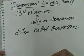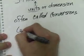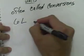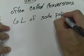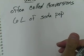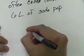The best way to learn is just to do an example problem. So let's take, let's say we have 6 liters of soda pop. And let's say that we want to convert this to gallons.